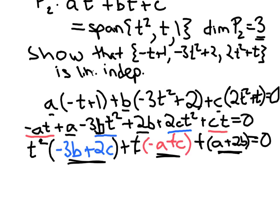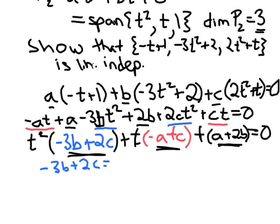So I can write three equations now. Negative 3b plus 2c must equal 0, so that I have 0t squared. Also, the coefficient of t must be 0, so negative a plus c equals 0, so I have 0t's. And then the constant term a plus 2b must be 0.